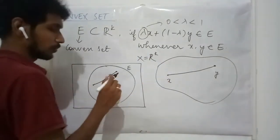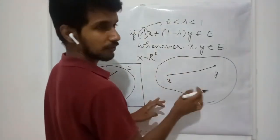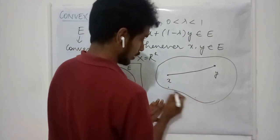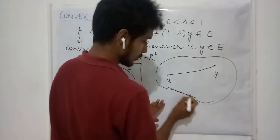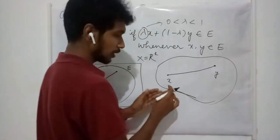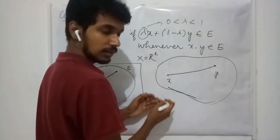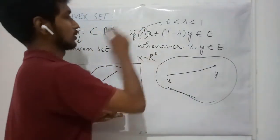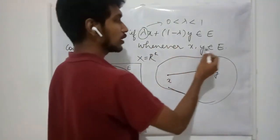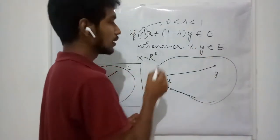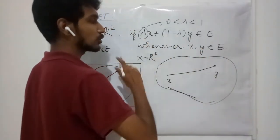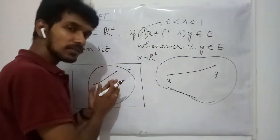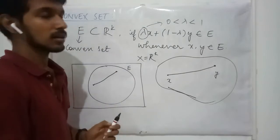Now suppose I have a point here and a point here, and when I try to join these two points by a line, I get some points which are outside the set. If that is so, this E cannot be a convex set. The definition tells you that whenever you have two points inside a set, the line joining these two points has to lie entirely inside the set. If that is so, then we can say the set is a convex set.